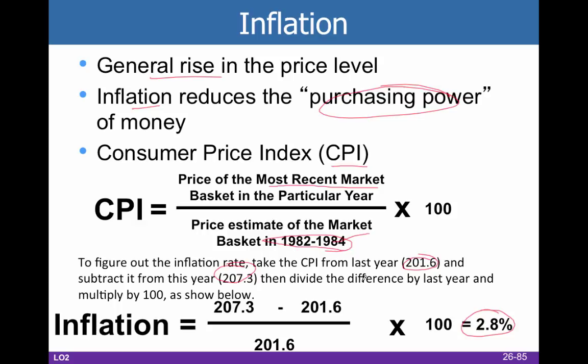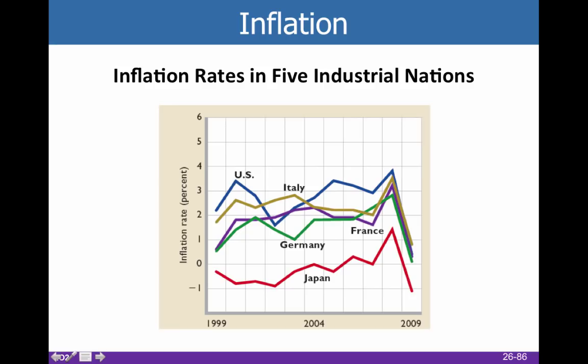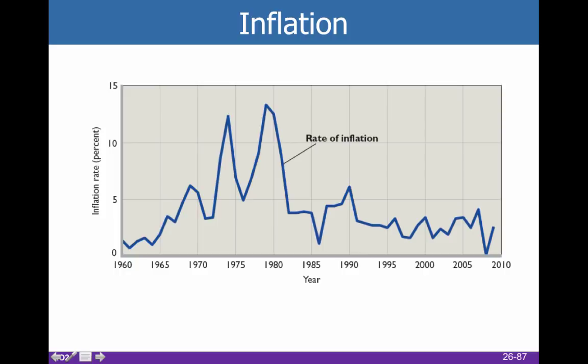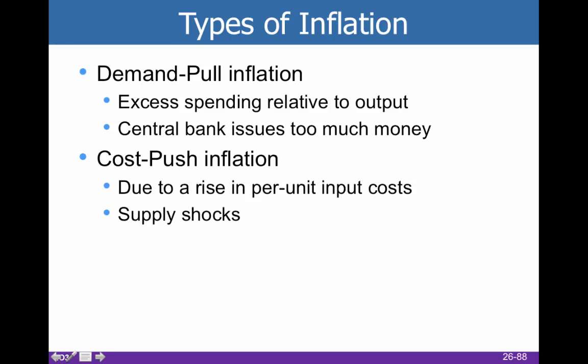Know that the Fed sets a target of 2%, which is considered healthy inflation. Here are some inflation rates in a couple of different cities. Japan is actually going through a deflationary period, which is going to be pretty problematic. The U.S. moves around a lot but is generally in the neighborhood of 2 to 3%, at least during the 2000s. In the 70s, we had pretty high inflation at various points.